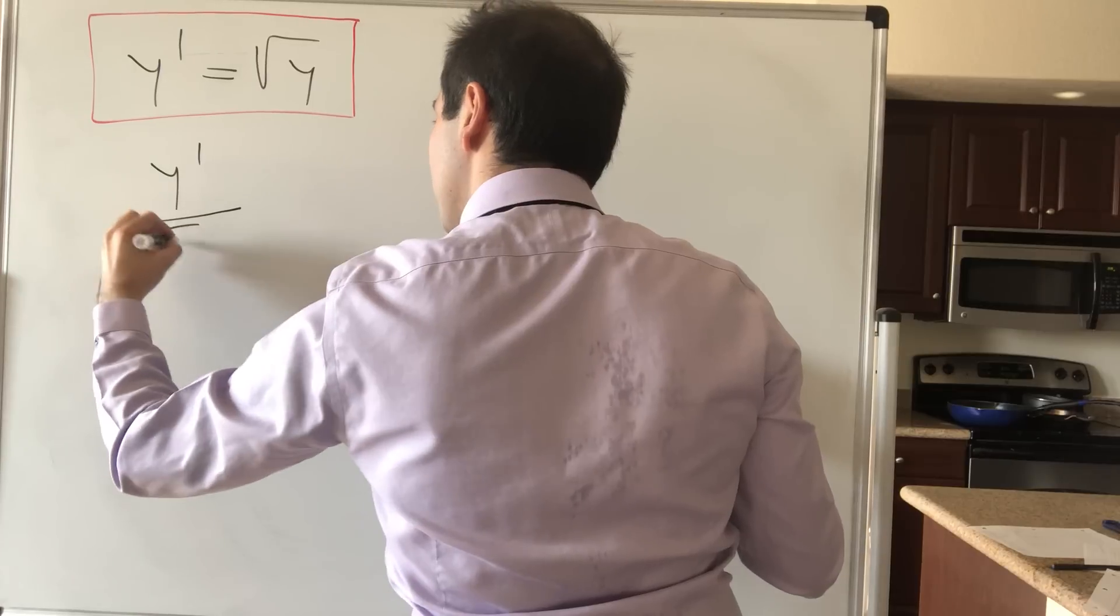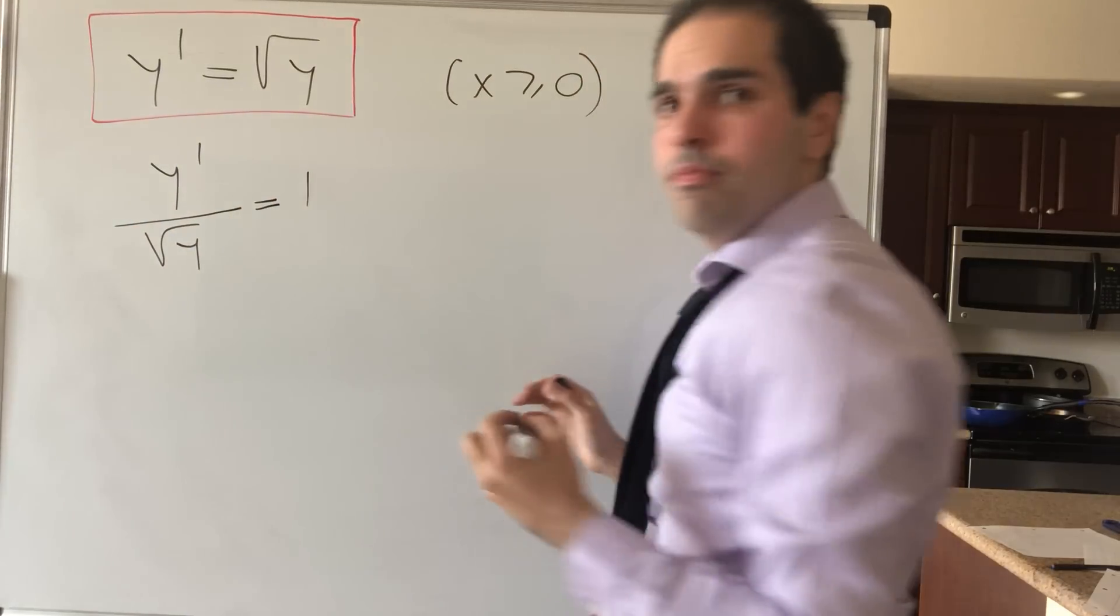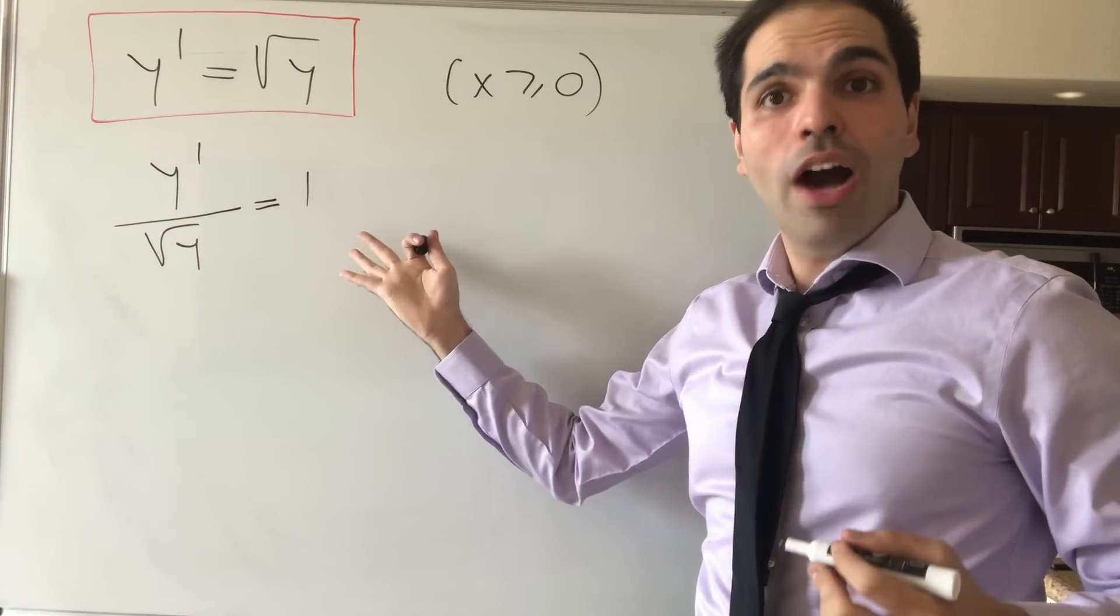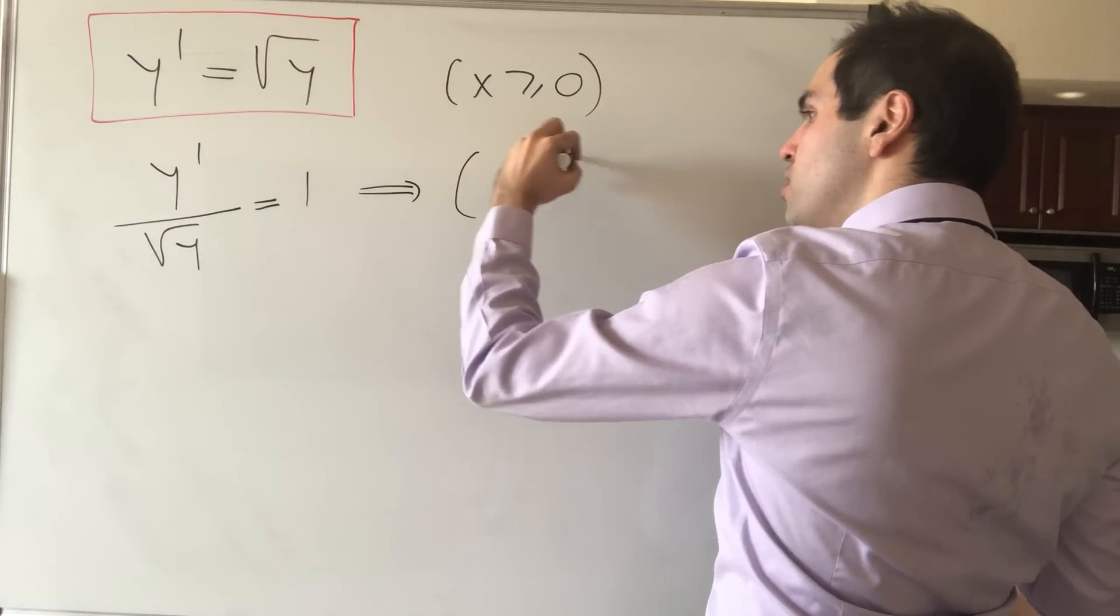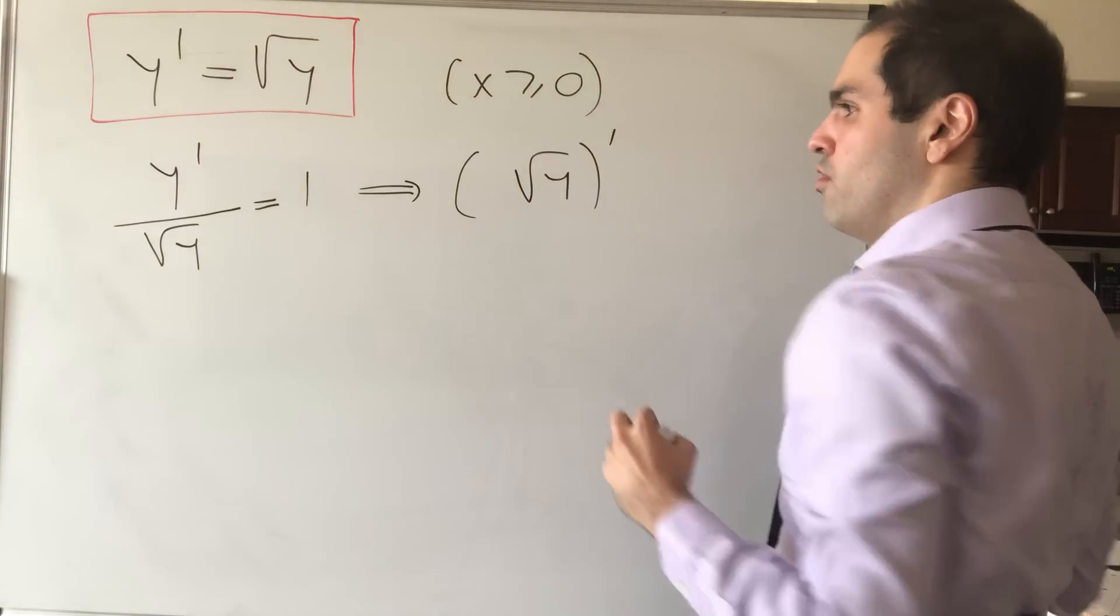So y prime over square root of y equals 1. And notice, you can write this as a derivative. So this almost looks like the derivative of square root of y.